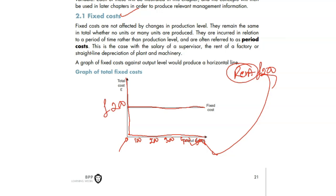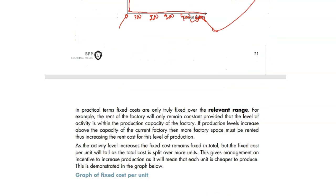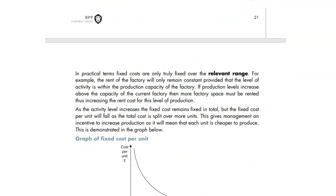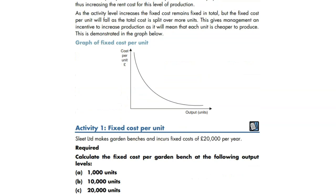Fixed cost total - this is the picture of fixed cost total that remains constant. But the fixed cost per unit goes down.